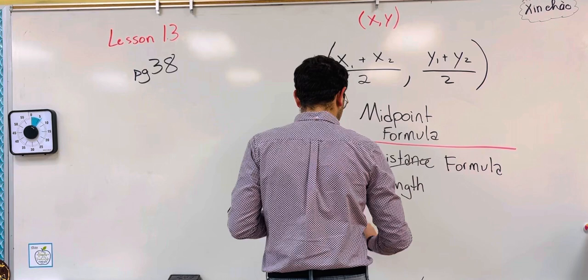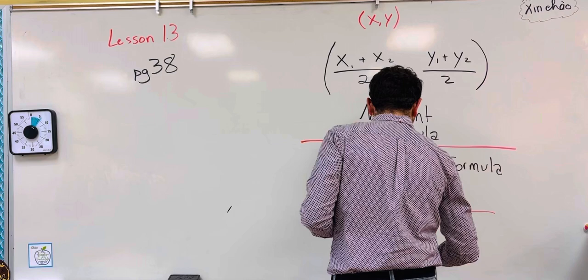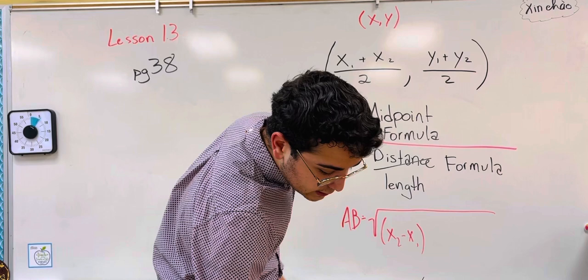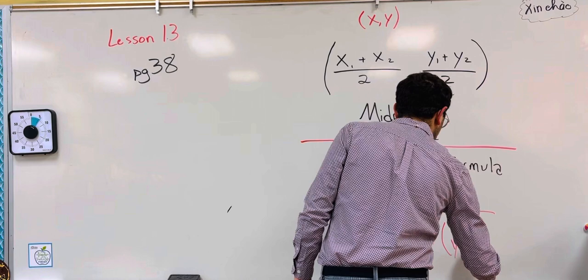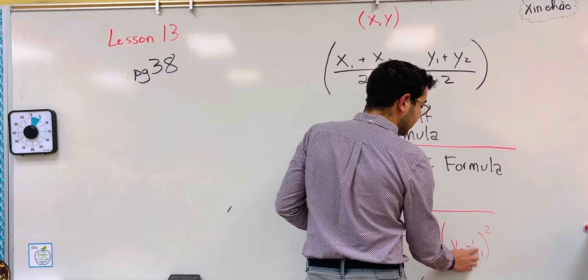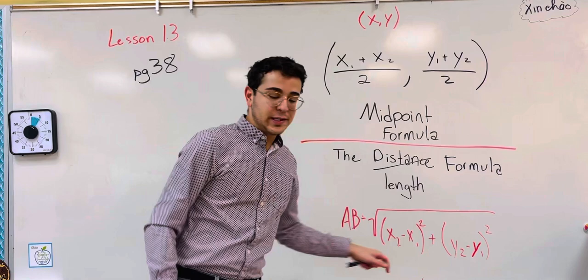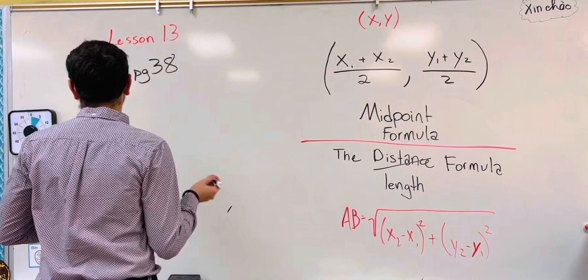The length formula is the square root of x2 minus x1 squared plus y2 minus y1 squared. What is going on here? Mr. Rivera, you said this would be simple. You said this would be common sense. I want a refund. This is not common sense. This is not simple. This is anything but. Hold your horses. I get that it's overwhelming, but we're going to break it down so that it's simple.